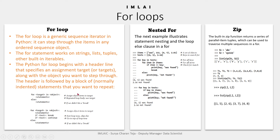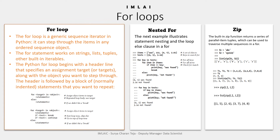The name used as the assignment target in a for header line is usually a variable in the scope where the first statement is coded. The for loop also supports an optional else block, which works exactly as it does in a while loop - it is executed if the loop exits without running into a break statement.